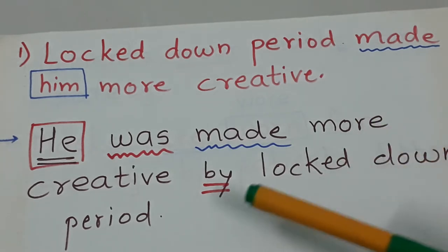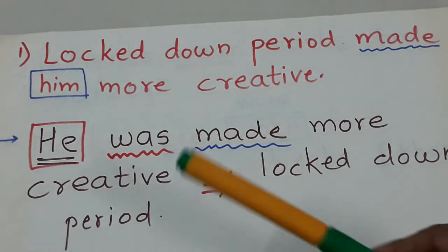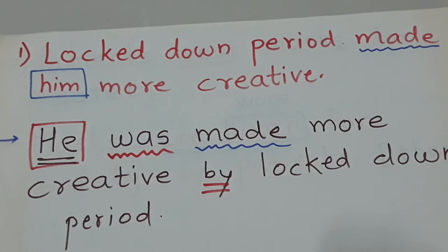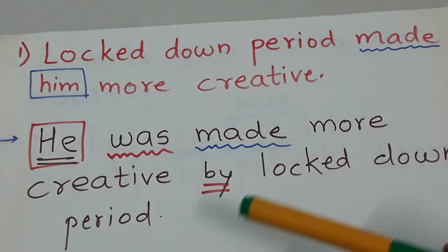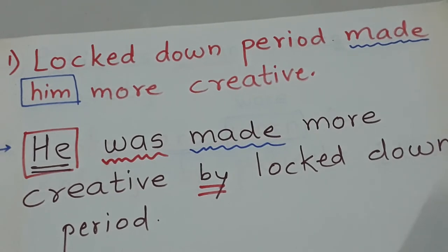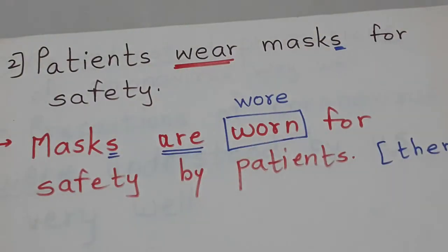Then comes was. Why did we take was? Because made is the past tense of make. So the answer becomes: He was made more creative by lockdown period. Now we write it this way. After he, we use was, then more creative. Pay attention to the sentence meaning. What made him creative? Made was the verb, so we use more creative after the verb to complete the sentence properly. Pay attention to the meaning first.